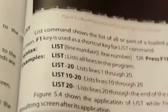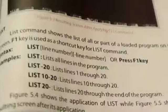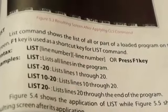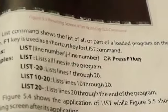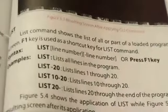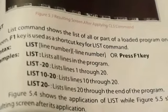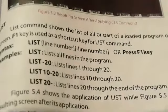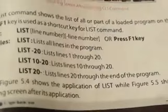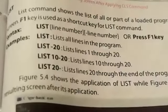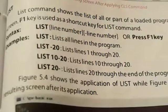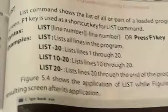Next, you have the LIST command. The LIST command shows the list of all or part of a loaded program on the screen. The F1 key is used as a shortcut key for the LIST command — if you press F1, it will show the program listing. The syntax is: LIST [line number] [line number].